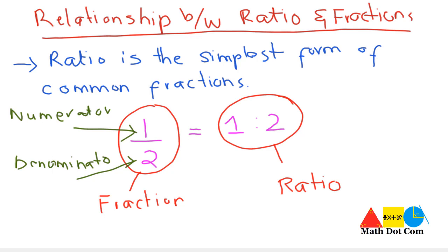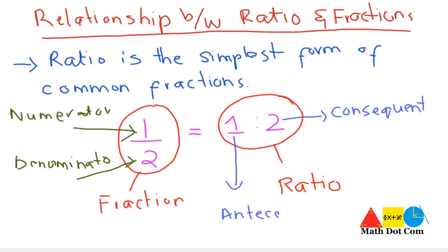The upper number is called the numerator and the lower number is called the denominator in the fraction. While in the case of ratio, this is called the consequent and this is called the antecedent. So these are a few terminologies you have to keep in mind while finding the relationship between ratio and fractions. It is clearly shown that ratio and fractions are the same thing, but the difference is the way they are written and some terminologies used to represent the numbers.